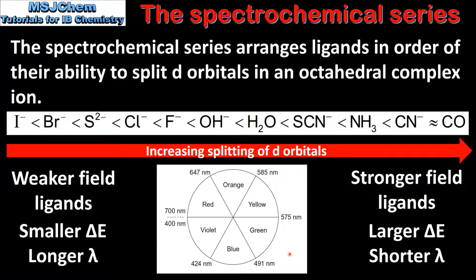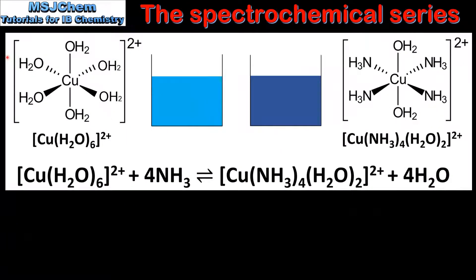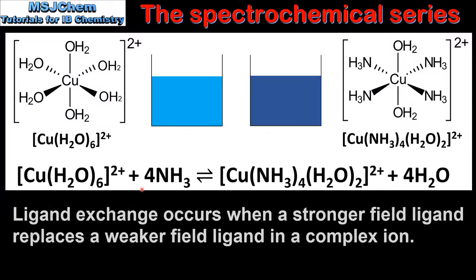Next we look at some examples. In this example we will look at the colors of two solutions of complex ions. The complex ion on the left has six water molecules as ligands, and the complex ion on the right has four ammonia molecules and two water molecules. The solution on the right was produced by adding excess ammonia to the solution on the left. This is known as ligand exchange, and is represented by the equation shown, where four of the water molecules were replaced by four ammonia molecules.